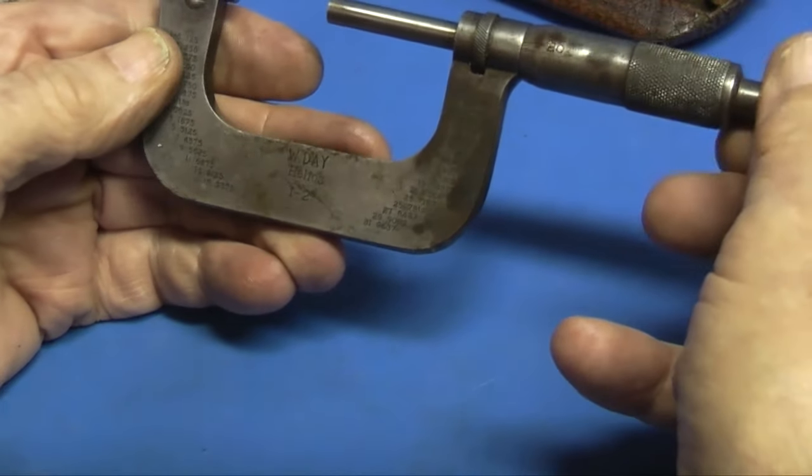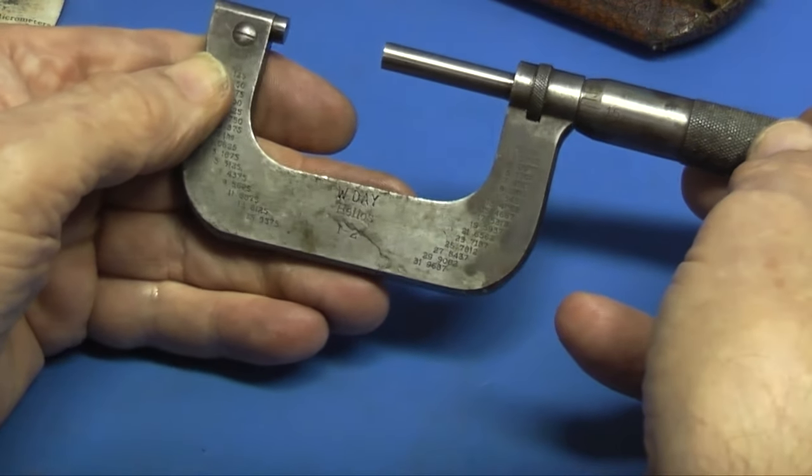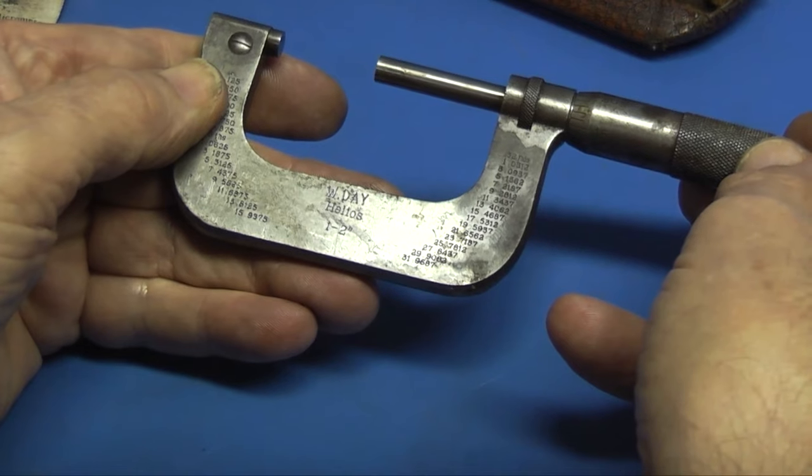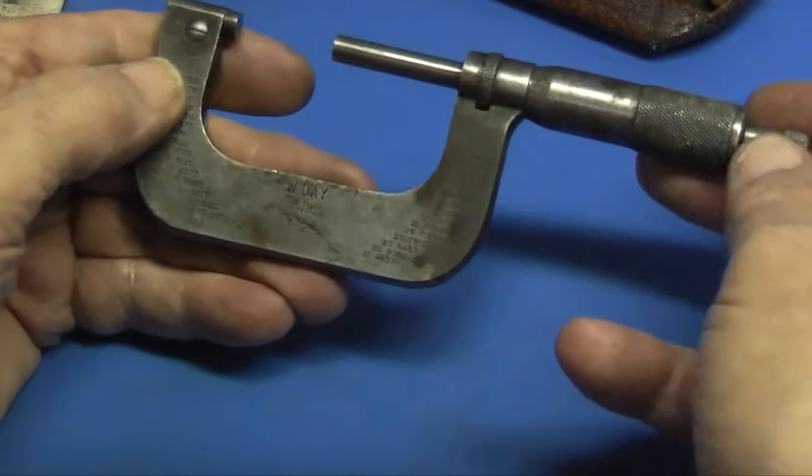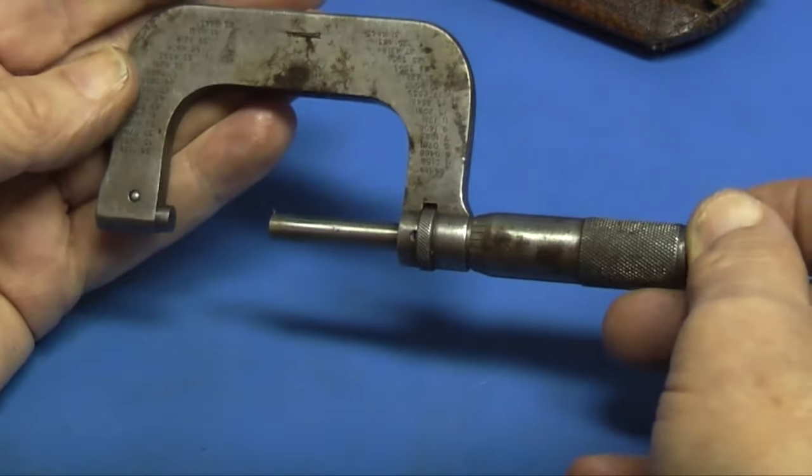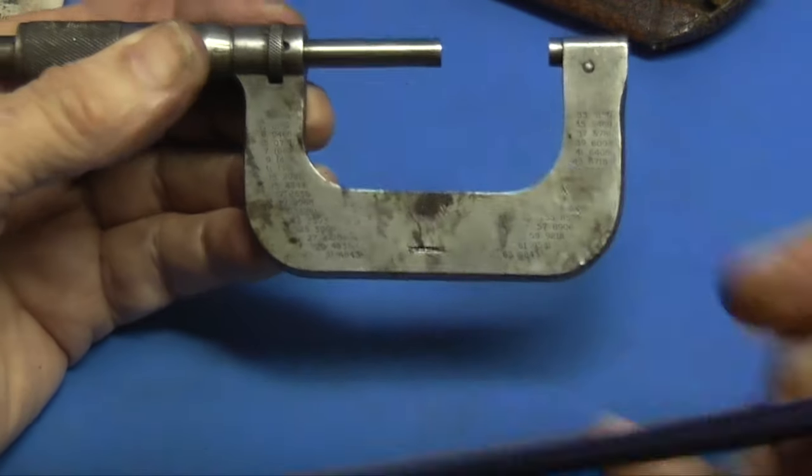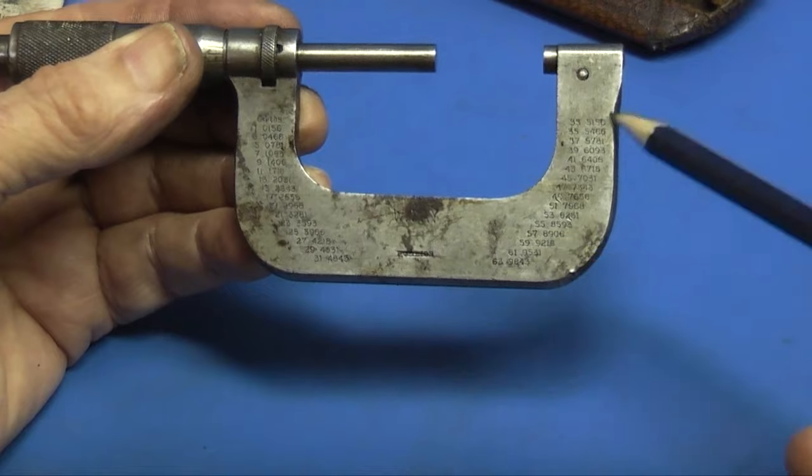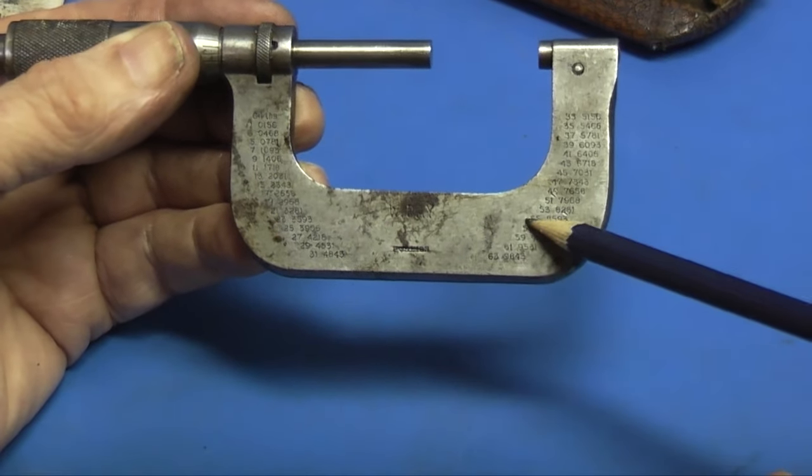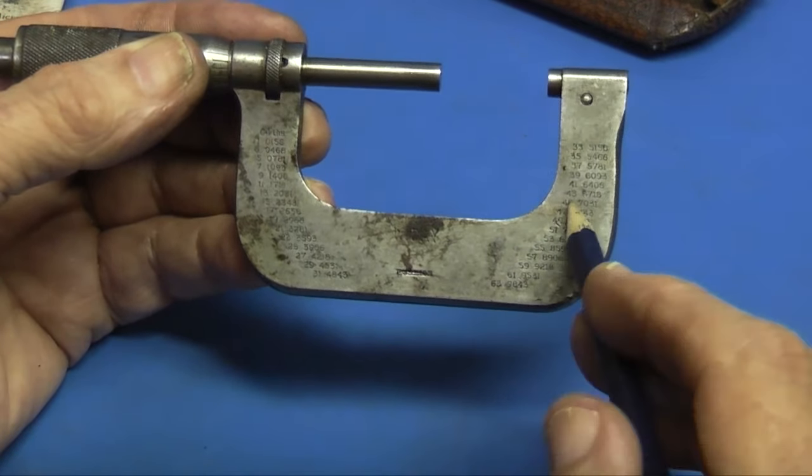And then the last micrometer I have is not Moore & Wright. This one's got somebody's name on and it's got Helios. So I don't know whether they bought them off other people and swapped them around. You can see on here it has all the different highlights measurements, 60ths, 64ths all the way around, what the reading would be on the micrometer.